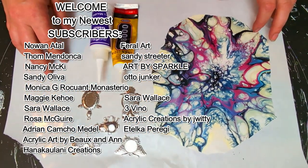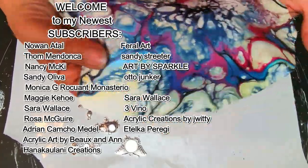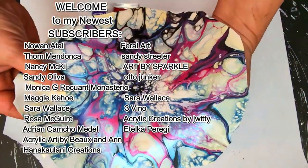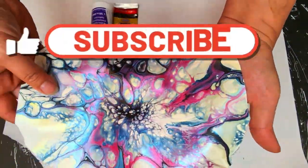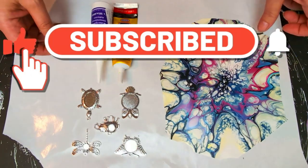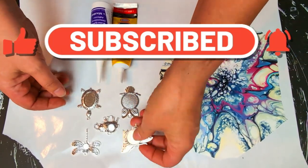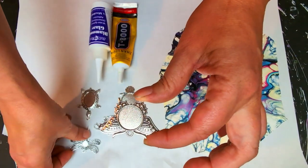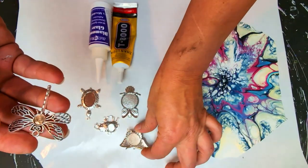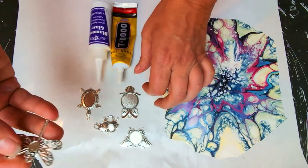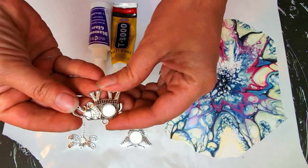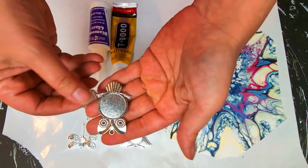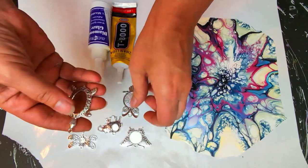The items you will need is a paint skin. This is the paint skin I will be using. You will need, since I'm going to be making pendants, I'm going to be using some blank pendants. We have a butterfly, a dragonfly, an elephant, an owl, and a turtle.